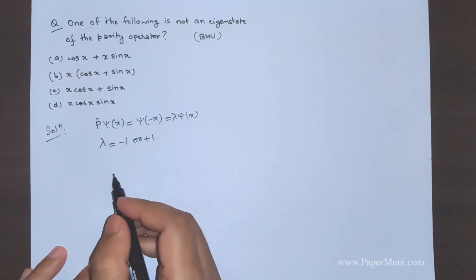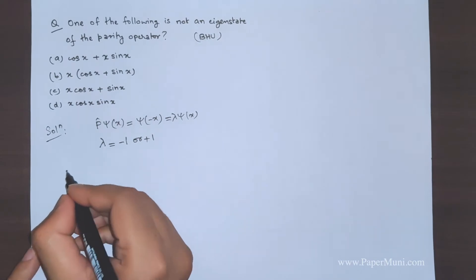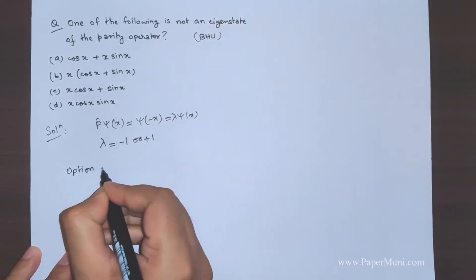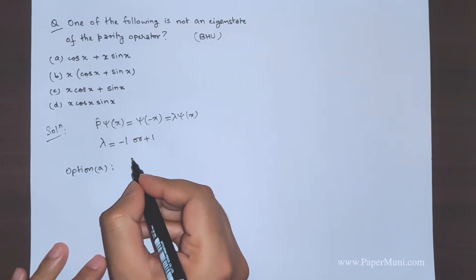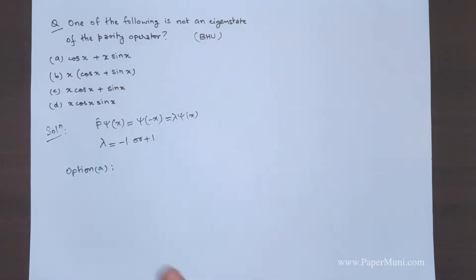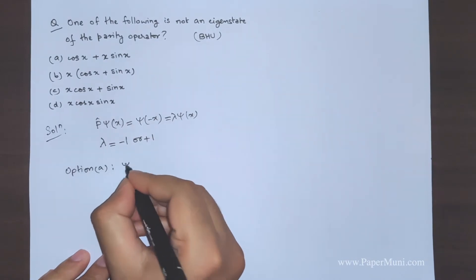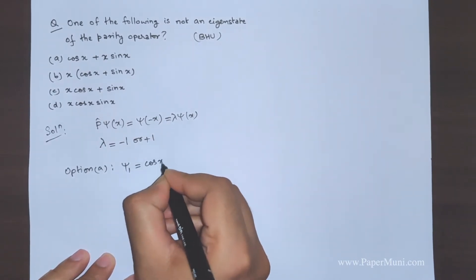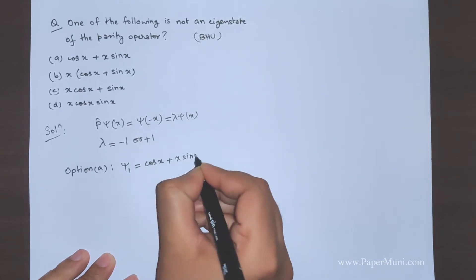We need to check each option and see what happens. For option A, the function is ψ₁ = cos(x) + x·sin(x). Applying the parity operator means replacing x with -x.